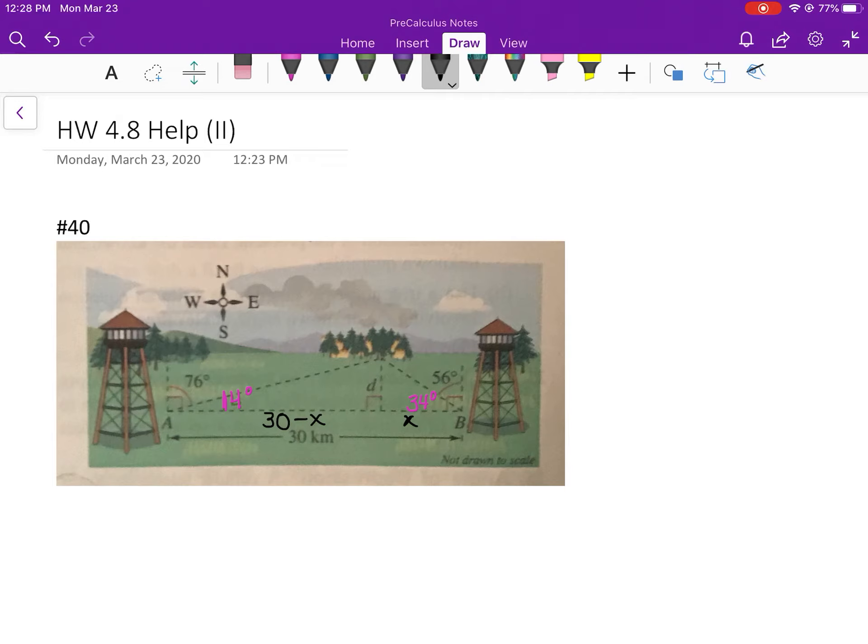So the first equation is going to be the tangent of 14 degrees and it's going to be D over 30 minus X. The second equation is going to be the tangent of 34 degrees and its tangent is D over X.